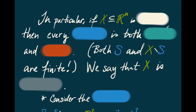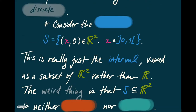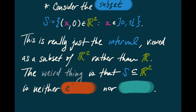That tells us that if we have a subspace of R^n that is itself finite, then every subset of that X is both open and closed. We say that X is discrete in that case — discrete means that every subset of X is both open and closed. Here's an example of a different flavor: consider the subset of the plane consisting of those points (x, 0) where x is in the open interval (0,1). This is really just that interval regarded as a subset of the plane rather than R itself. The funny thing is that this subset is now neither closed nor open.